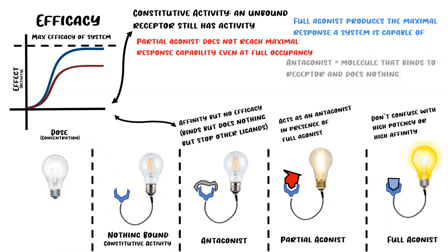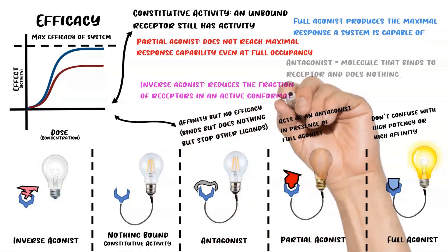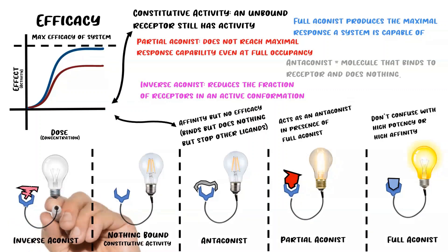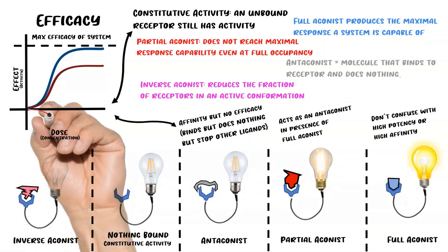This brings us to our last type on the agonist spectrum: the inverse agonist. The way an inverse agonist works is that it binds the receptor and removes the constitutive activity. When we hook a light bulb up to it, we see that it's actually emitting less light than if absolutely nothing was bound.